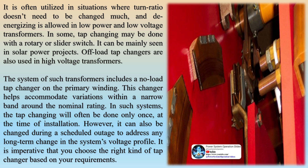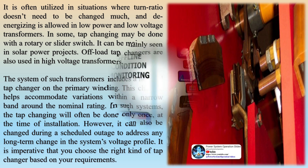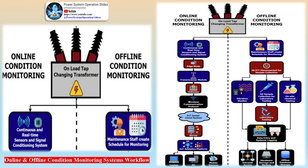When supplying power to a customer load, the transformer output must be kept at a relatively constant voltage regardless of the changing current required by the load. This is accomplished by installing a load tap changer onto the transformer. The LTC actually changes the transformer turns ratio by moving among a number of access points or taps on one of the two windings, thus either raising or lowering the voltage supplied to the customer.